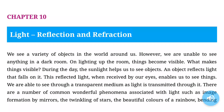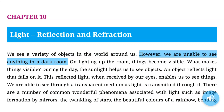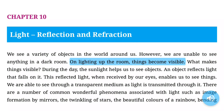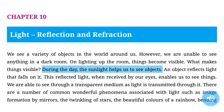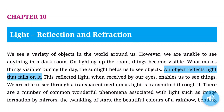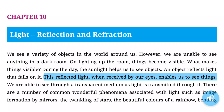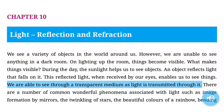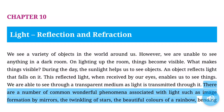Chapter 10: Light Reflection and Refraction. We see a variety of objects in the world around us. However, we are unable to see anything in a dark room. On lighting up the room, things become visible. What makes things visible? During the day, the sunlight helps us to see objects. An object reflects light that falls on it. This reflected light, when received by our eyes, enables us to see things. We are able to see through a transparent medium as light is transmitted through it.